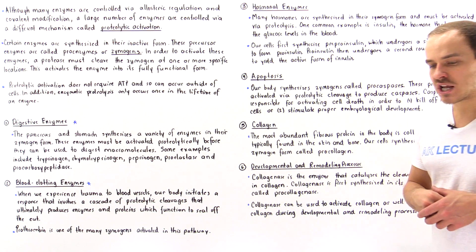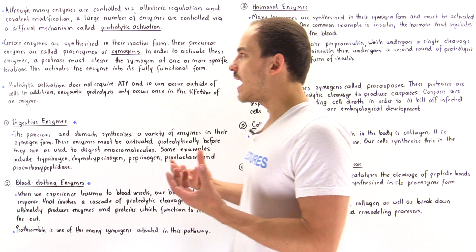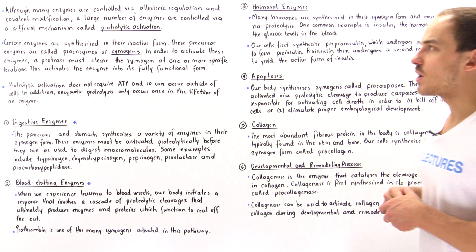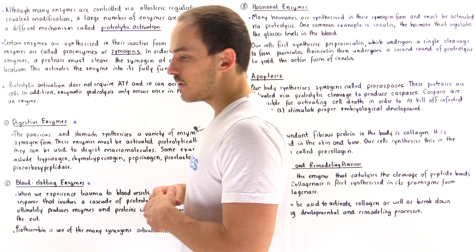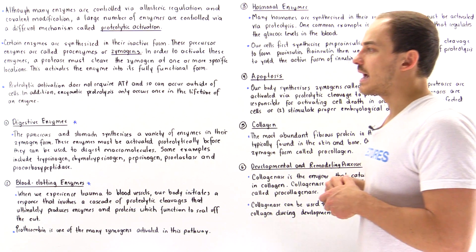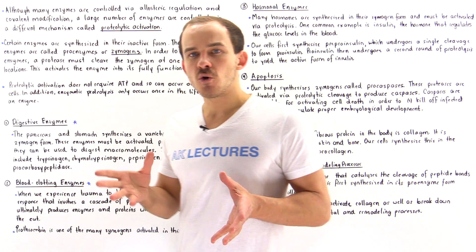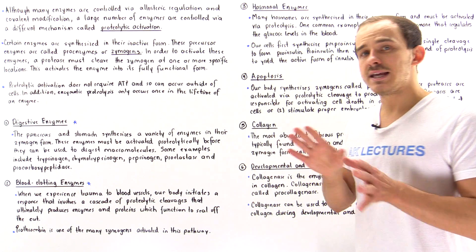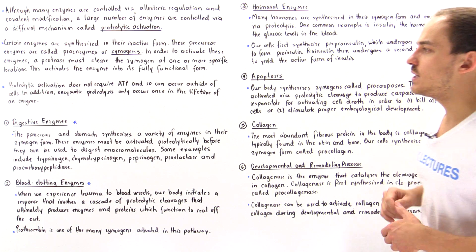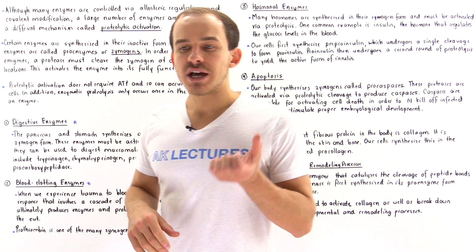The next question is: what are some examples of enzymes and biological proteins found inside our body that utilize the process of proteolytic activation? I've listed six different categories. Categories one and two we're going to focus on in much more detail in the next several lectures, and three through six we're going to focus on briefly in this lecture. Let's begin with one: digestive enzymes.